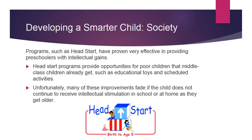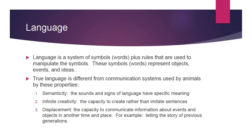Now we're going to move on and start talking about language. Language is how we learn most often. Language is a system of symbols or words plus rules used to manipulate these symbols, which represent objects, events, and ideas. In English we use words, but Japanese and Chinese use symbols. True language is different from communication systems used by animals by these properties: semanticity — sounds and signs have specific meaning; infinite creativity — the capacity to create rather than imitate sentences; and displacement — the capacity to communicate about events and objects in another time and place.